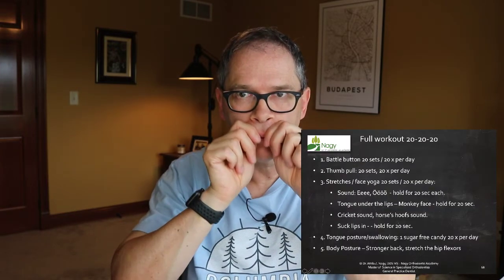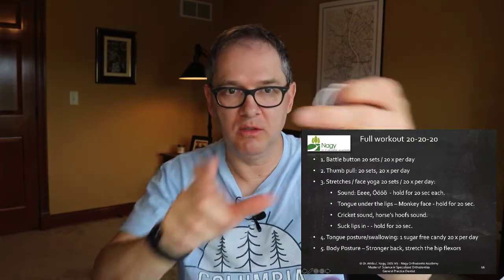The other thing you can do is simple stretching exercises. In that research, they used thumb stretches — you put your thumb behind your upper lips and simply pull down to stretch them. By stretching your upper lips, the muscles will stretch and your lips will get longer. You can also do the monkey face where you push air behind your lips and hold it. So you do those three exercises: the battle button, thumb stretches, and the monkey face.